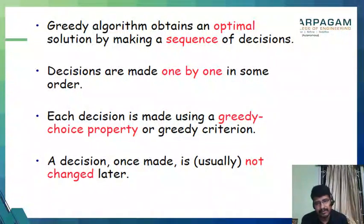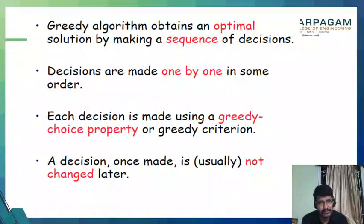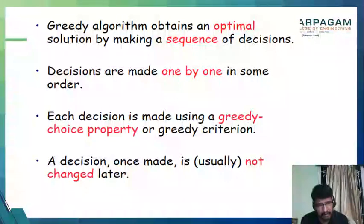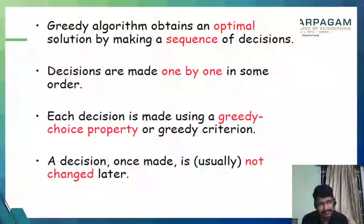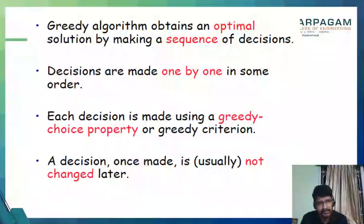Literally, greedy denotes that as a synonym. The decision made using the greedy choice property is utilized here. And remember a very important factor: the decision once made cannot be revoked. It cannot be changed at any point later. That is one of the important properties of a greedy method.